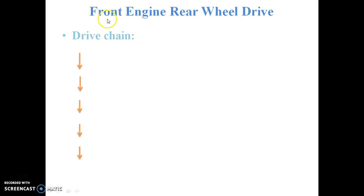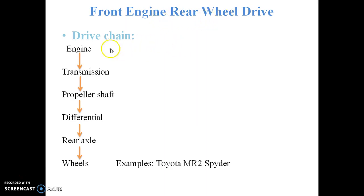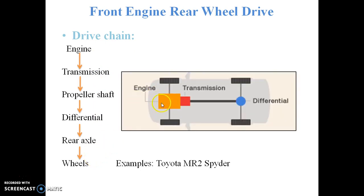In the front engine rear wheel drive, the engine is mounted at the front axle whereas the power is transmitted to the rear wheels. The power is transmitted from the engine to the transmission system, which mainly consists of the clutch and the gearbox. From the transmission system, the power goes to the propeller shaft, then to the differential, then to the rear axle, and then to the rear wheels.